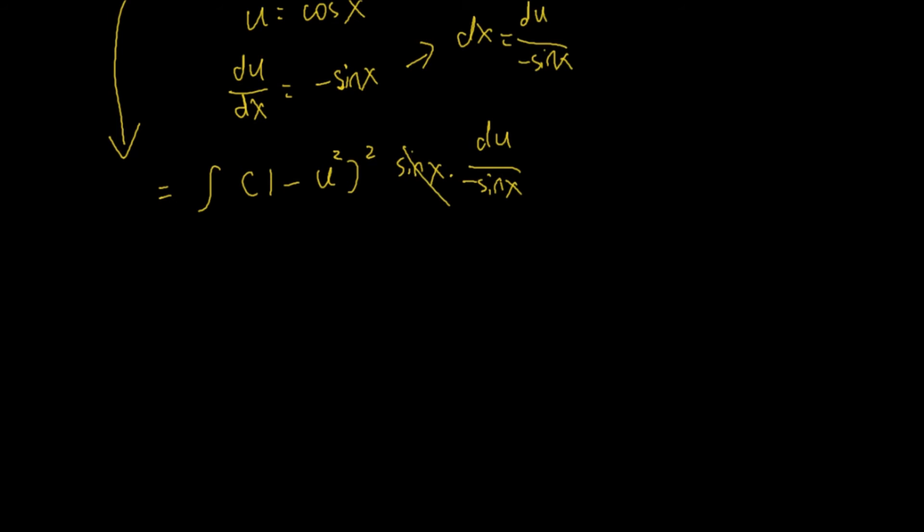So sine x and sine x cancel out. We have a negative one here, so we have to move it in front of the integral sign. So we have negative integral (1 minus u^2)^2 du.